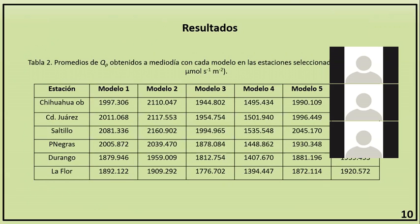Los valores máximos de radiación PAR se obtienen alrededor del mediodía, mientras que los mínimos se obtienen al ocaso y al amanecer. La tabla 2 muestra los promedios de los resultados obtenidos con cada modelo al mediodía durante el tiempo de observación en cada estación. Al analizar la tabla, se puede observar que todos los resultados rondan los 2000 micromoles por segundo por metro cuadrado, con excepción del Modelo 4, que ronda los 1500 micromoles.